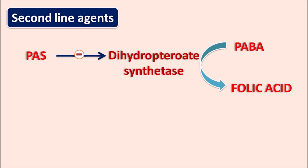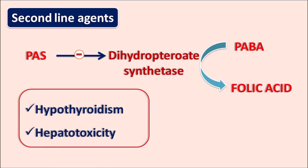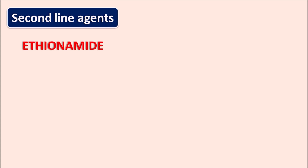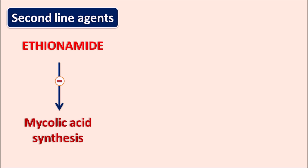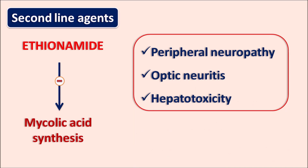Para-aminosalicylic acid can affect thyroid levels resulting in hypothyroidism, and it can also produce hepatotoxicity. Next is ethionamide — the exact mechanism of this drug is unknown, but it again inhibits mycolic acid synthesis within the mycobacteria. Ethionamide produces many side effects: neurotoxicity resulting in peripheral neuropathy, optic neuritis similar to ethambutol, and hepatotoxicity similar to isoniazid.